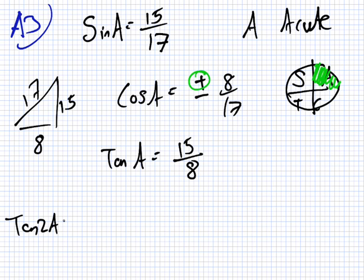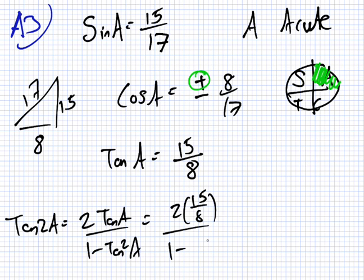So, tan 2A is 2 tan A over 1 minus tan squared A. 2 times 15 over 8 over 1 minus 15 over 8 squared. Which is 15 over 4 over 1 minus 225 over 64.